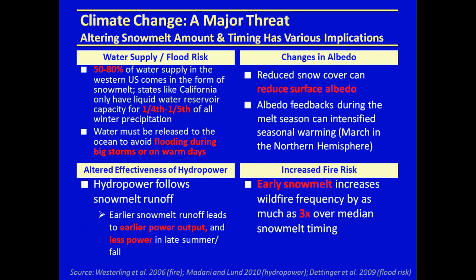How is climate going to affect us through snow? Changes in climate will affect water supply and flood risks. Fifty to eighty percent of all water supply in the western U.S. comes in the form of snowmelt. States like California only have liquid water reservoir capacity for one-fourth to one-fifth of total winter precipitation. Therefore, if snow falls as rain instead, you can't capture all of it in the reservoirs, and water has to be released to the ocean to avoid flooding during winter storms.